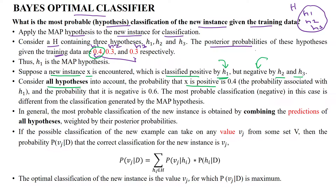So the probability that X is positive is 0.4, and the probability that it is negative is 0.6. That means H1 classifies X as positive, H2 as negative, and H3 as negative. When considering all hypotheses together, H1 is for positive with value 0.4.